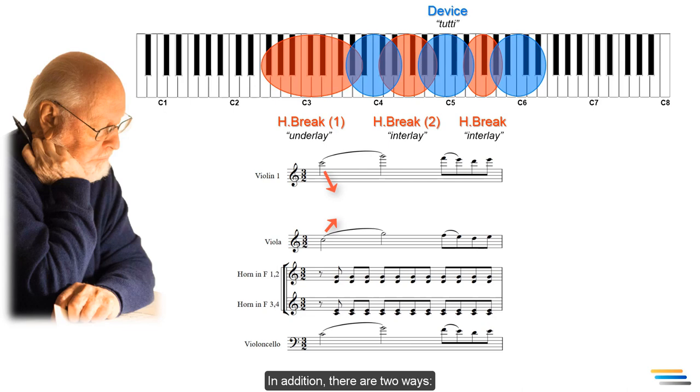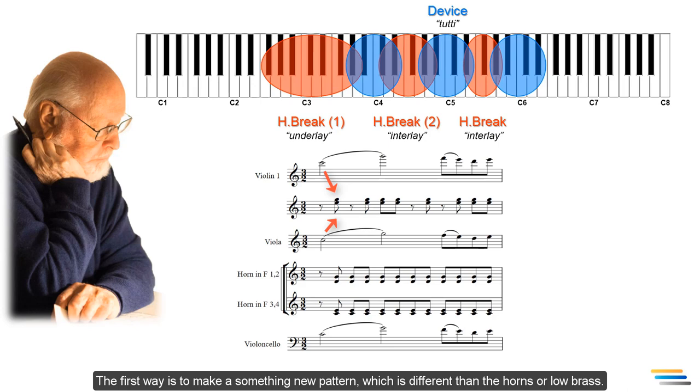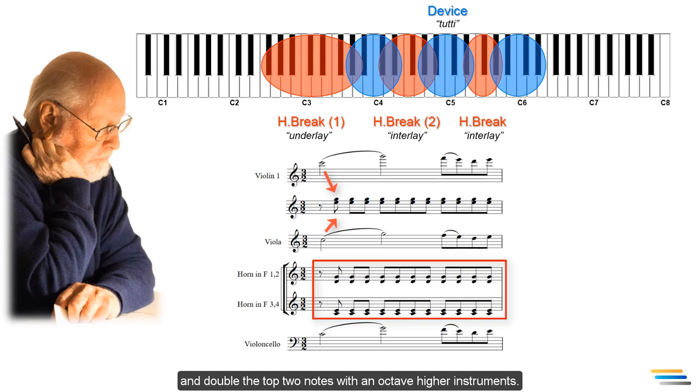In addition, there are two ways. The first way is to make a new pattern, which is different than the horns or low brass. The second way is to use the same pattern of the horns and double the top two notes with an octave higher instruments.